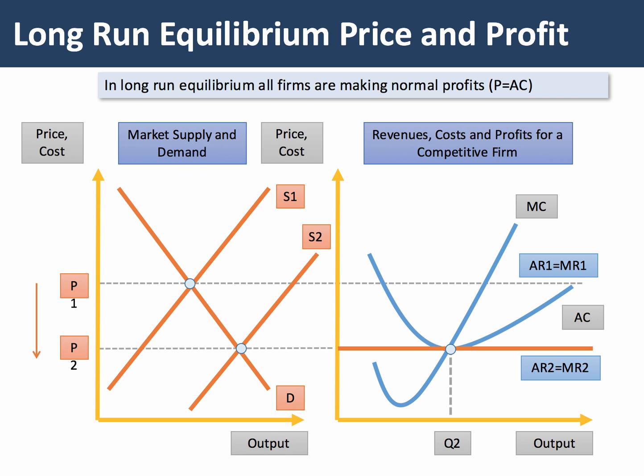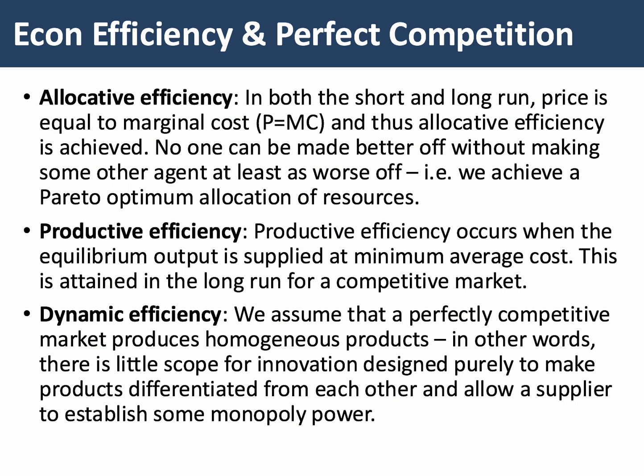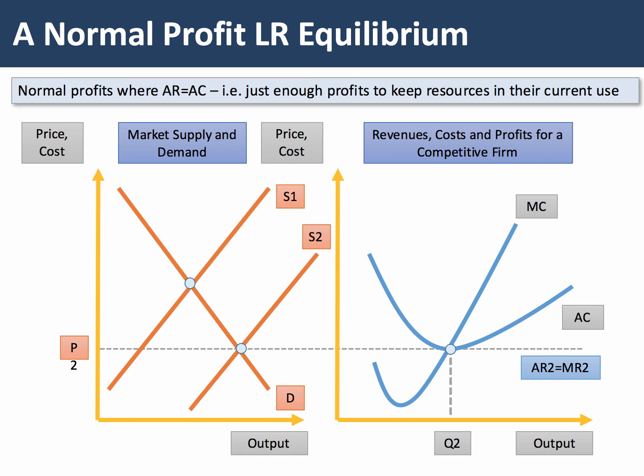At Q2, price equals average cost and we're also at the minimum point of the average cost curve. If they're making normal profit, they're just making enough to keep their resources in current use. Thinking about economic efficiency: in perfect competition this market is allocatively efficient — price equals the marginal cost of production. It's a Pareto optimum, meaning nobody can be made better off without making some other agent in the market at least worse off.